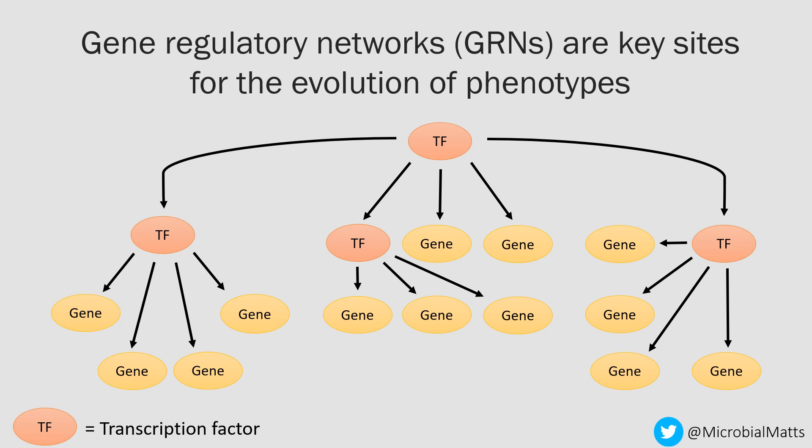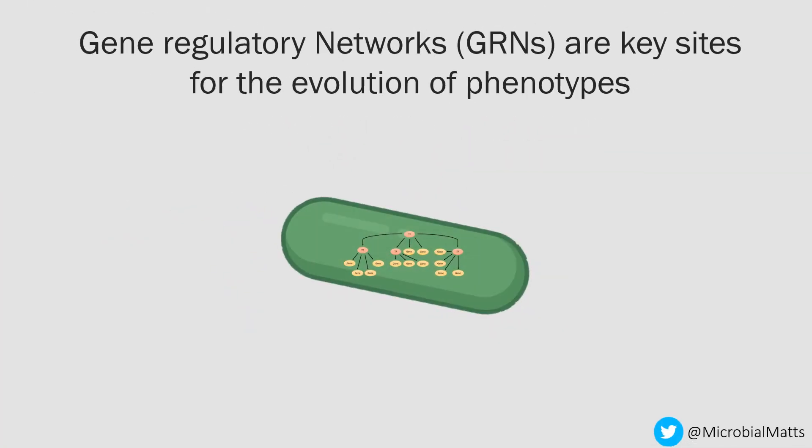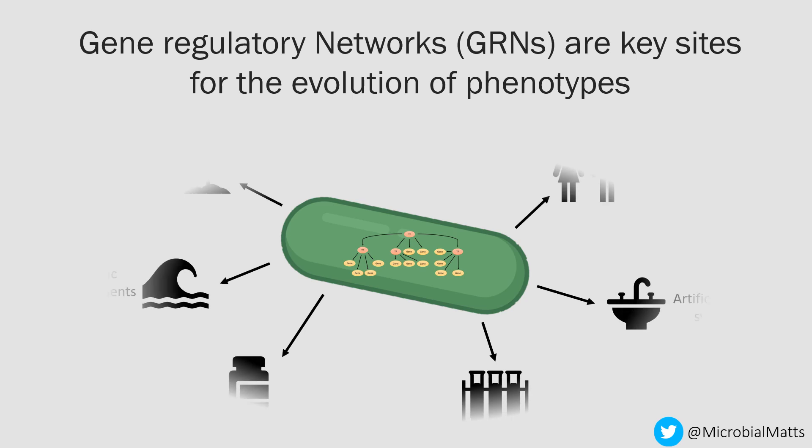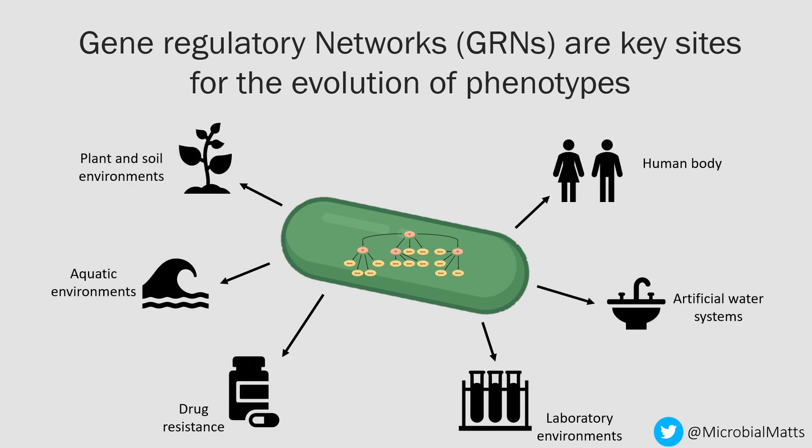These networks are normally modular and contain a small number of master transcription factors that control a large number of target genes. They exist within all living cells and generally determine an organism's response to its environment, or the generation of its phenotype. Because of this, they are key hotbeds for phenotypic evolution, as it is much easier to achieve a change to a phenotype by having mutations occur within the regulatory systems rather than all of the individual target genes, and this has been observed in a large number of experimental studies.